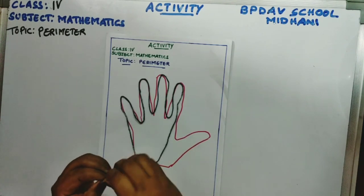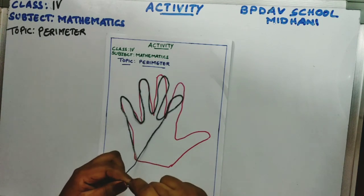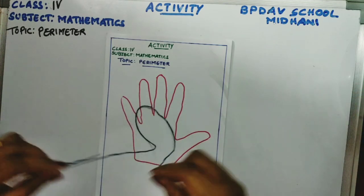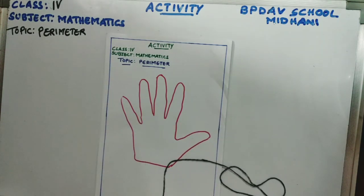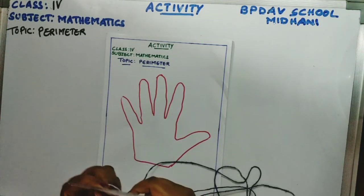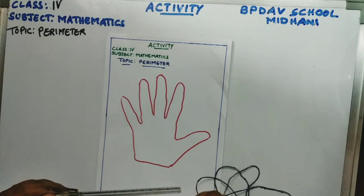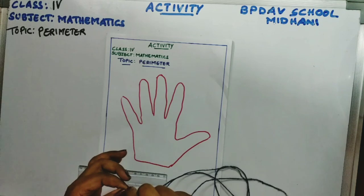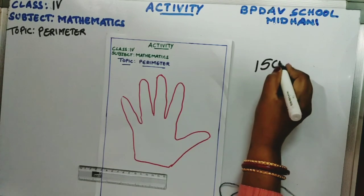Approximately — we will not get an exact measurement — you can tie a knot here. That means this is the length of the boundary of my palm. Now I have to measure this length. I will use a measuring scale — I am using a 15 centimeter scale here, starting from zero. This first section is 15 centimeters.